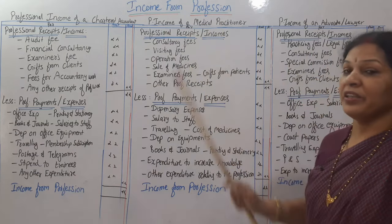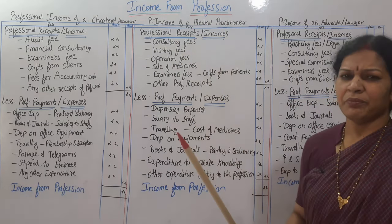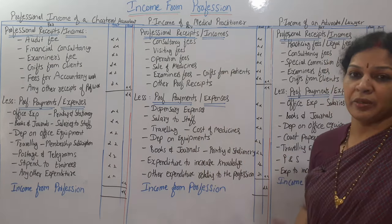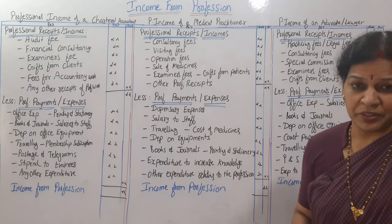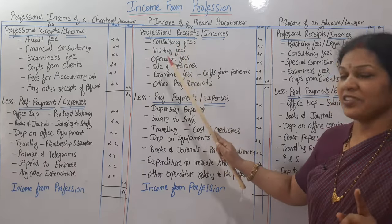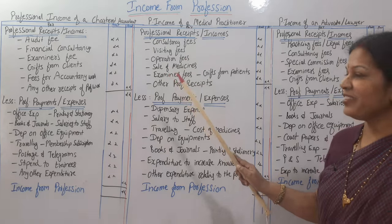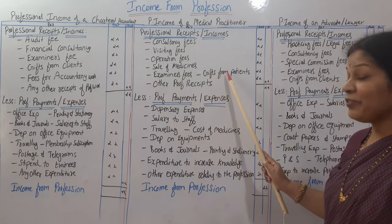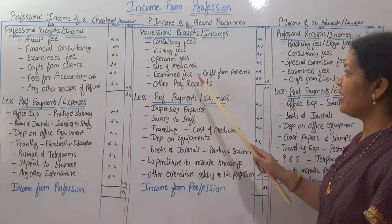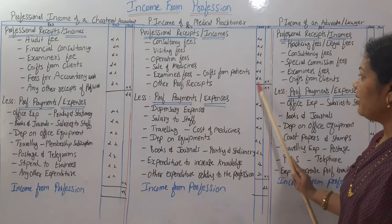Next is the professional income of a medical practitioner, meaning any doctor. The concept is the same. First we take professional receipts or income: what kind of receipts does a doctor get? Consultancy fee, visiting fee, operation fees, sale of medicines, examiner's fee, gifts from patients, and any other professional receipts. These are totaled and written in the outer column.